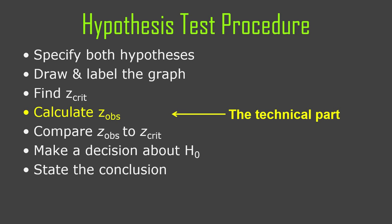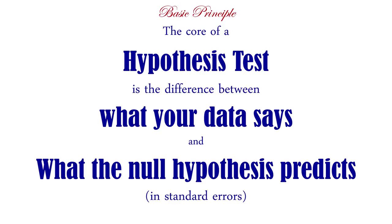The technical part is calculating z, but it's not terribly difficult. The calculation of these test statistics is always the same pattern. The core of a hypothesis test mathematically is this test statistic, and it's always just the difference between what your data says and what the null hypothesis predicts your data should have said, expressed in standard errors. In other words, it's a z score — a z score based on your data in the distribution of the null hypothesis.